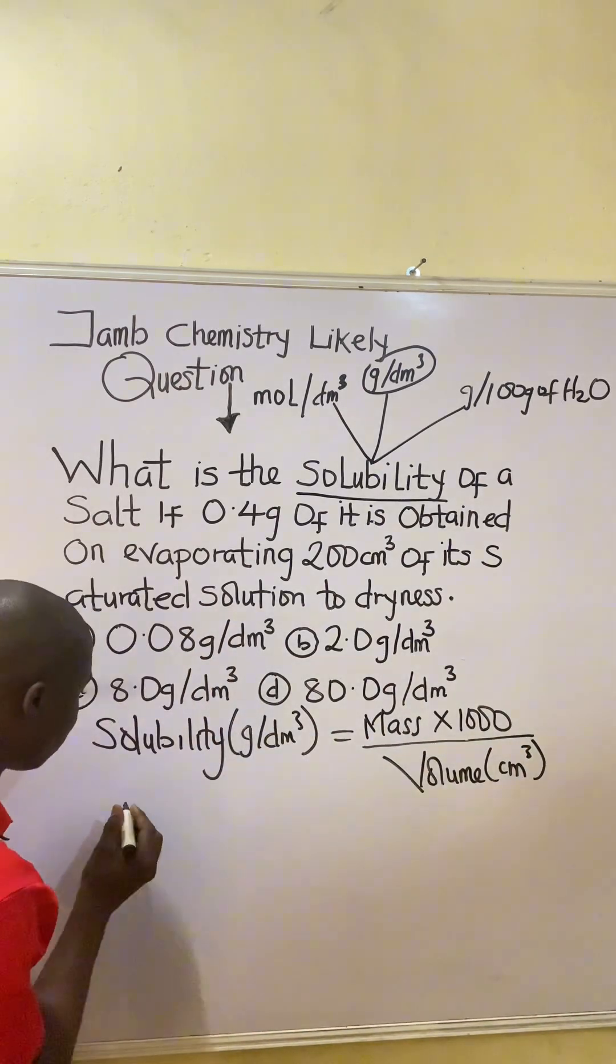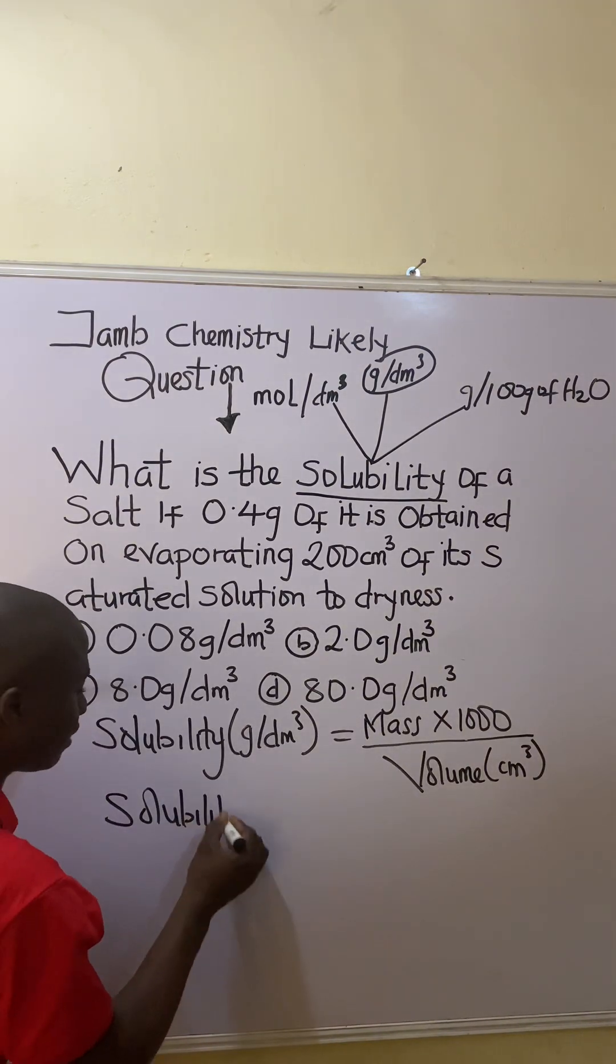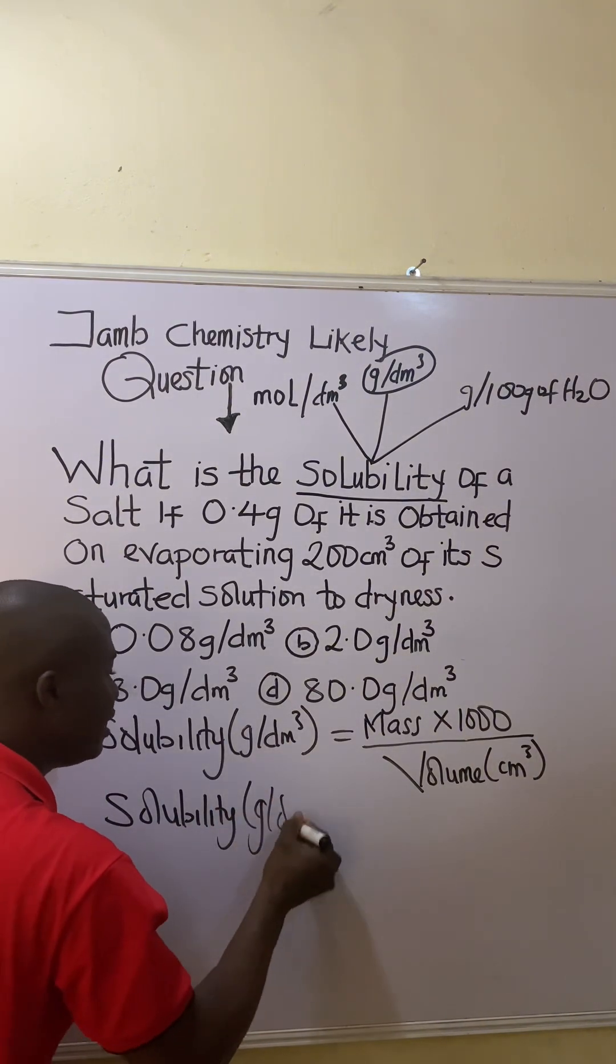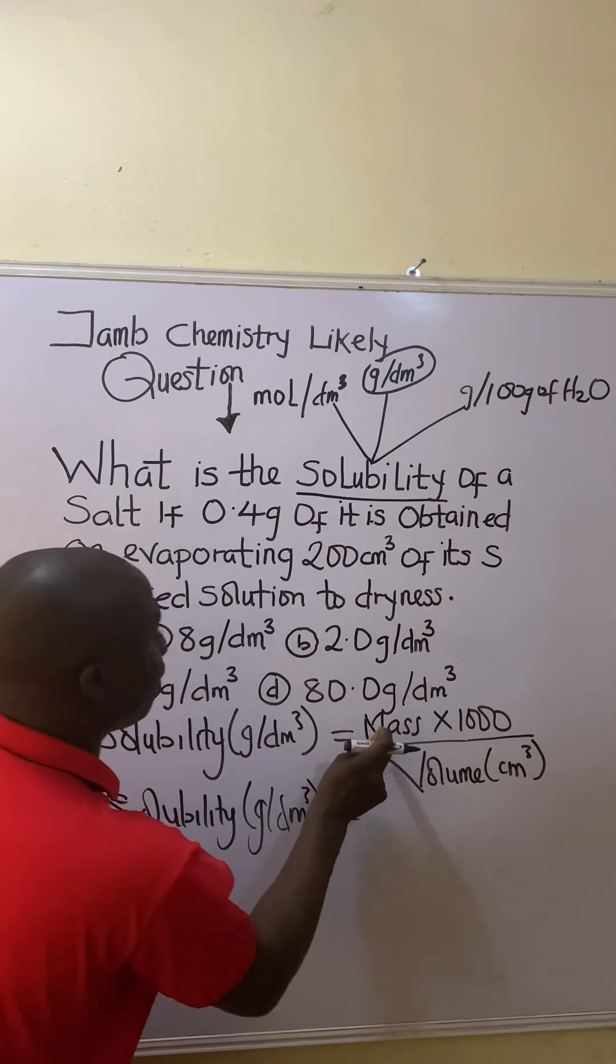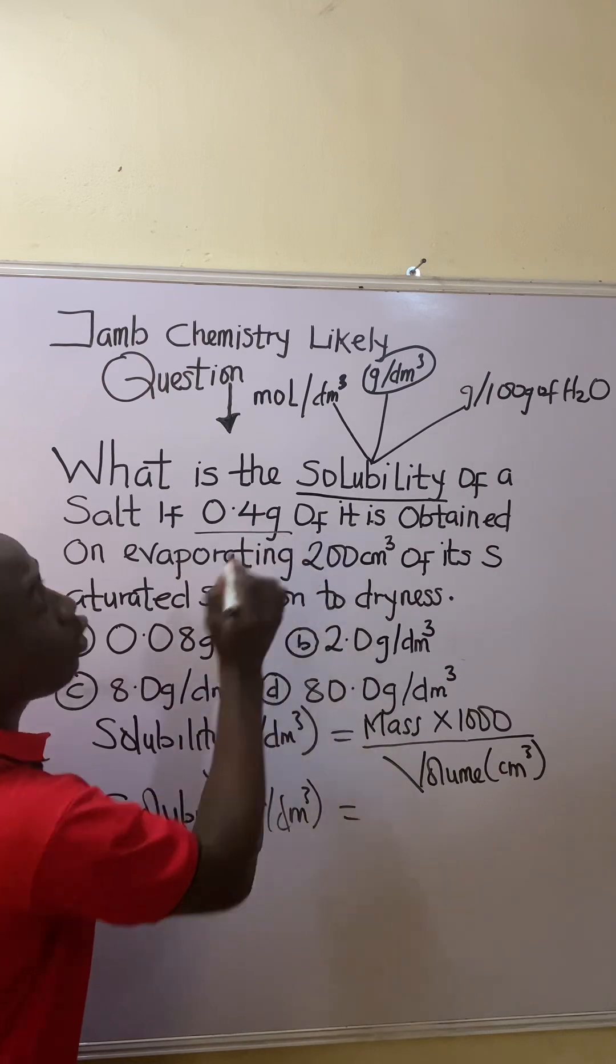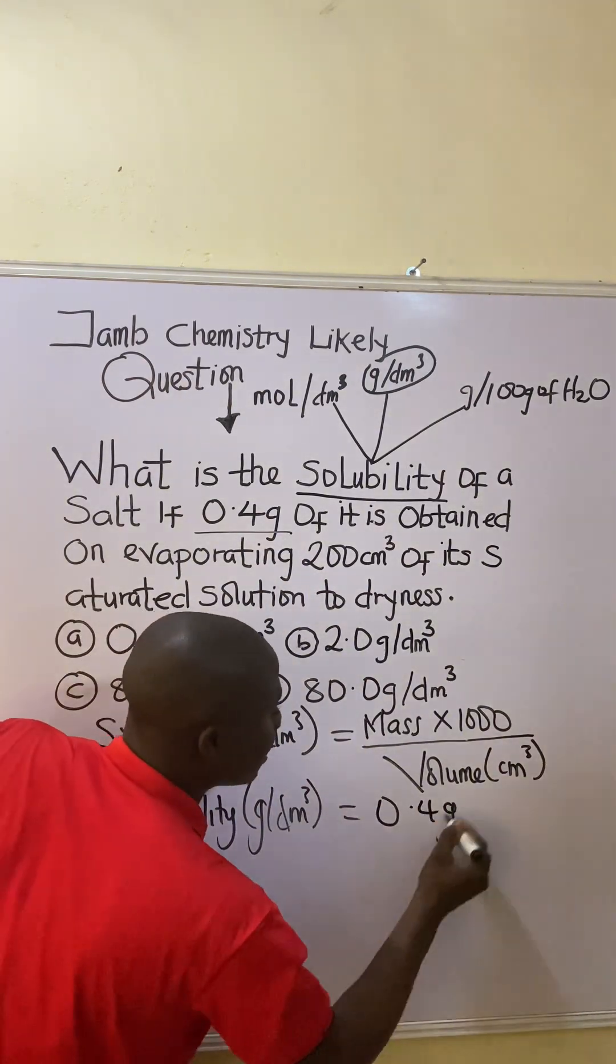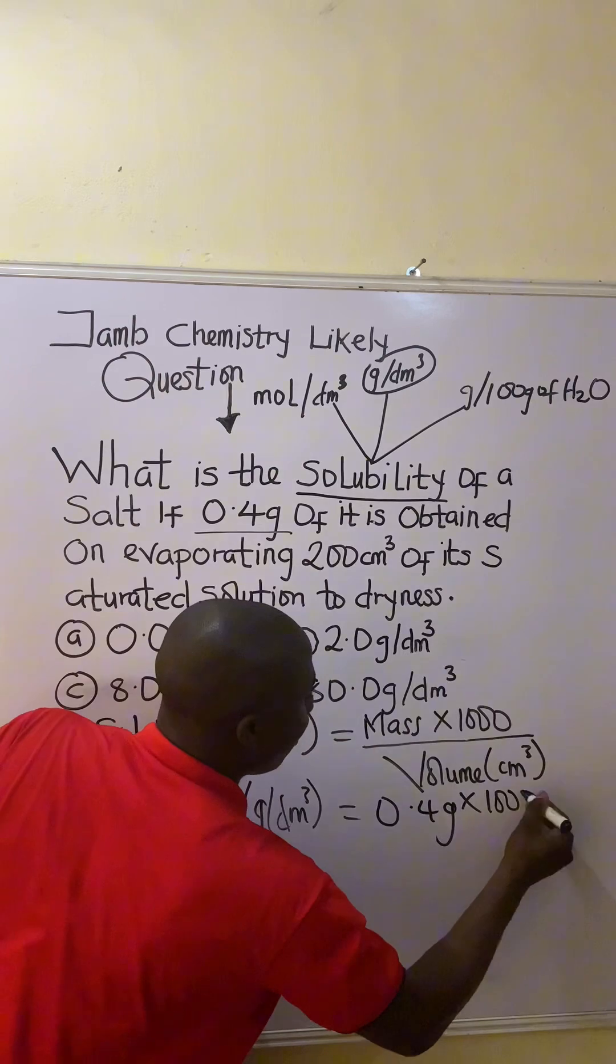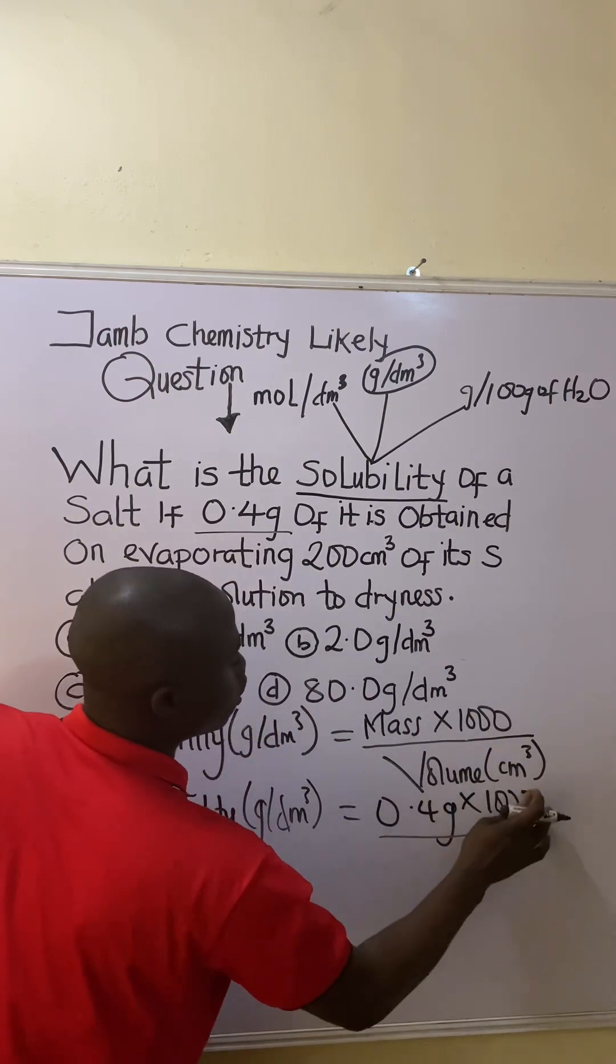So let's solve solubility in grams per dm³ as stated by the question. Solubility in grams per dm³—what's the mass? The mass in the question was stated to be 0.4 grams, so here becomes 0.4 grams times 1000.